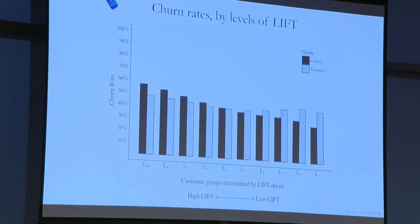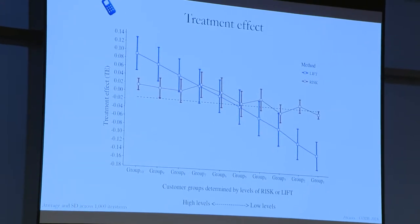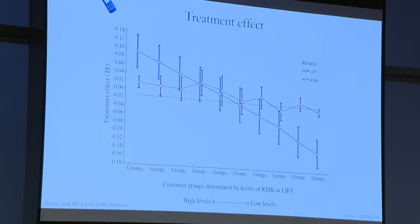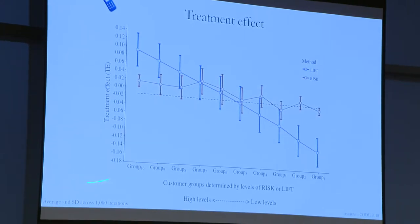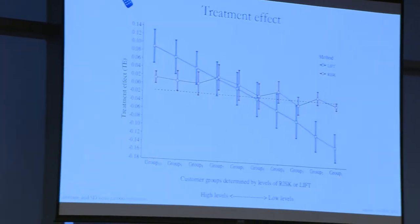In the next slide, the red line is always about the risk deciles when you sort customers by risk, and the blue is when you sort customers by lift. The high treatment-effect people have a high treatment effect — that's expected. But what is interesting was to see how suboptimal the risk-based strategy was — you are not really reducing churn if you go after people at the highest risk.